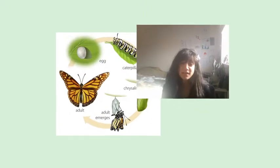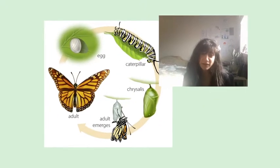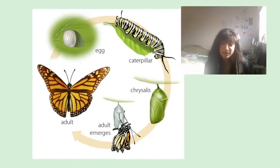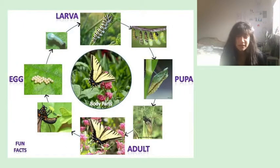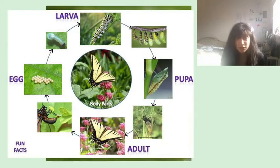Today I'm going to talk about the life cycle of the butterfly. Butterflies are amazing creatures that have one of the most interesting life cycles. They go through what is called a metamorphosis, which means their whole body changes really fast.